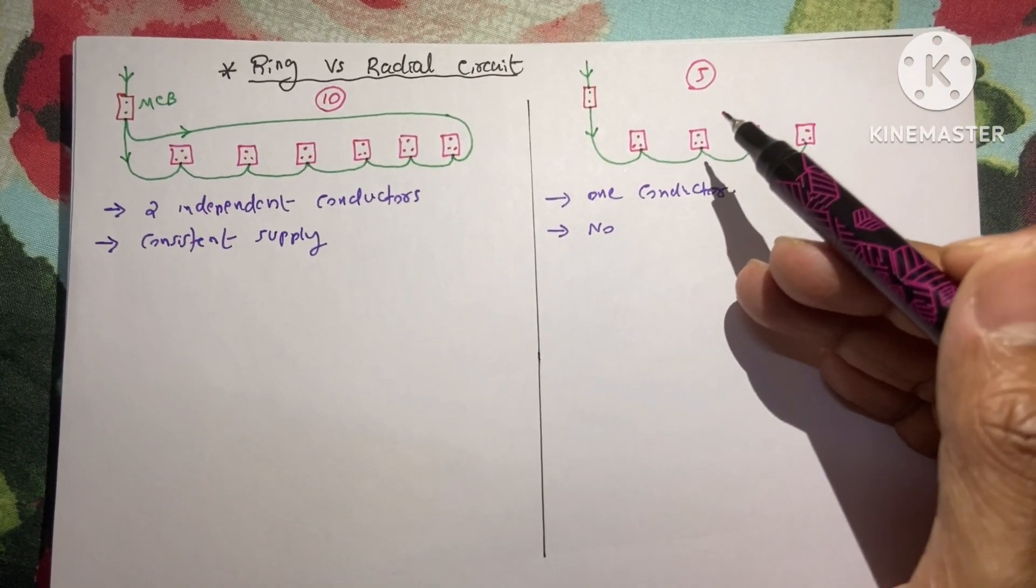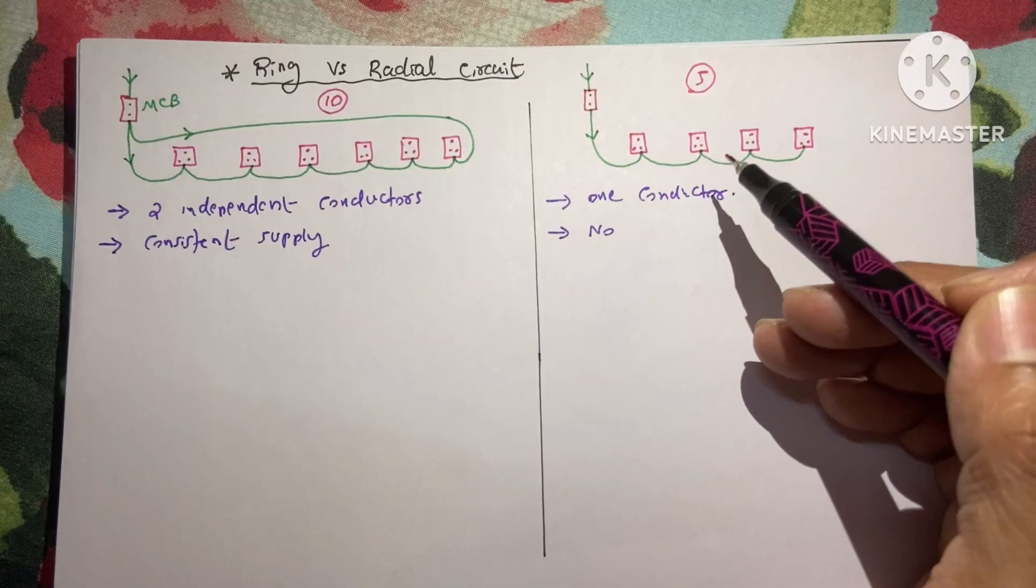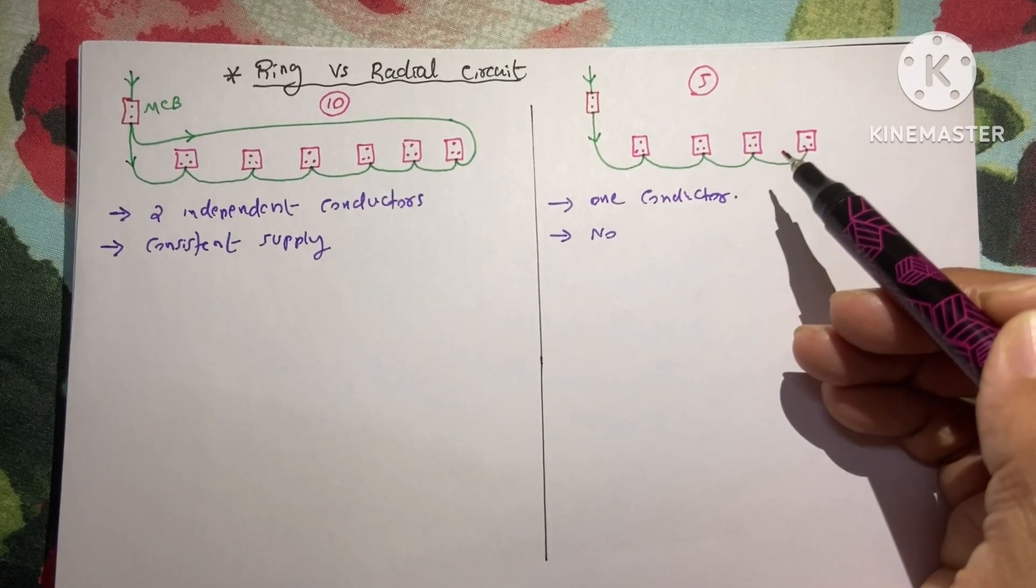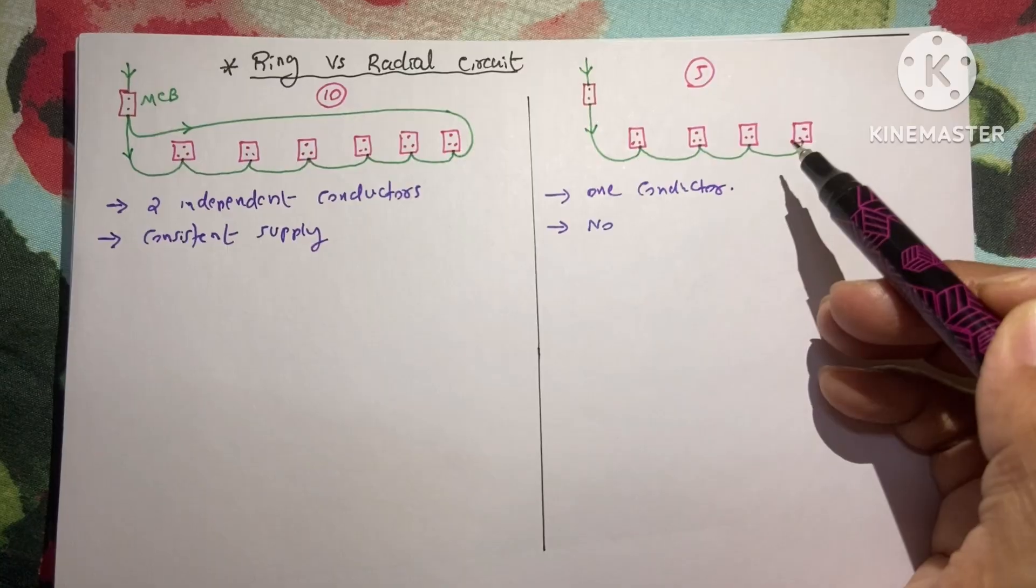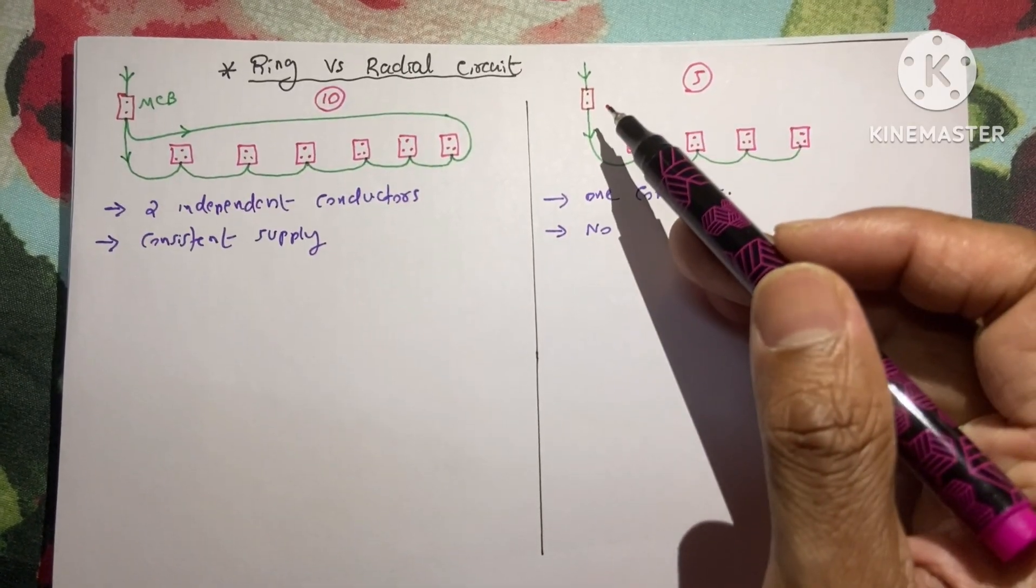In radial circuit maximum allowable sockets in one circuit is five. Here I've already shown four number of sockets. This is the MCB.